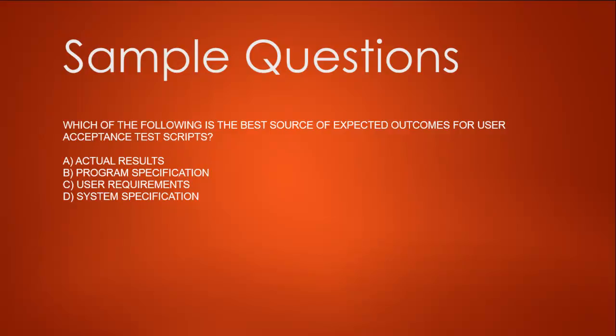A, actual result; B, program specification; C, user requirements; D, system specification. So we are trying to know the source of expected outcome for our acceptance test script. Actual result won't be a best source. Program specification doesn't look closer either because it relates to only program. C, user requirements, we know that what exactly user wants and what flow he is going to go through, so we can think of that as a source for expected outcome. Option D, system specification, also again is not true. So option C looks closer to our answer. The answer is C.